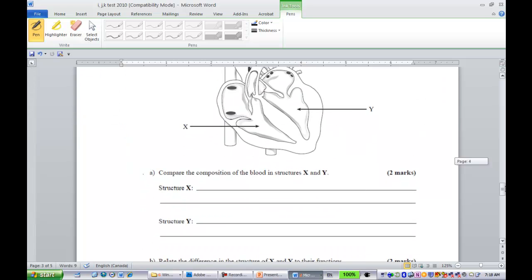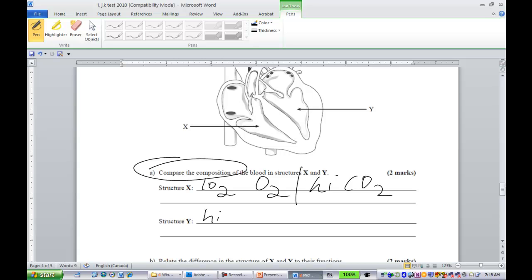This diagram, most of us, I'd say 99% of us got this right. On the right-hand side of the heart, this is low, and all they wanted was the composition of the blood. It was great that you named it, but it wasn't part of the mark requirement. They wanted you to compare the blood composition. So, low O2 blood or high CO2 blood. Or oxygen-rich, oxygenated, all the same. Structure Y would be high O2 blood or low CO2. Either or.